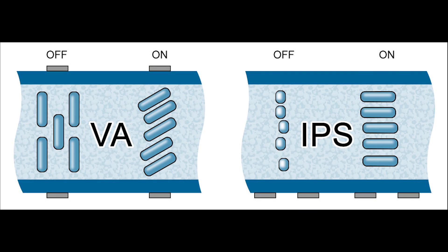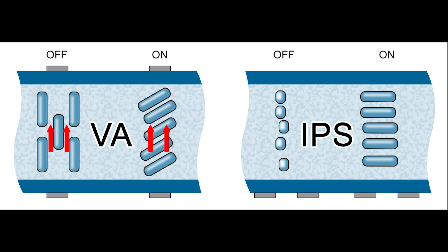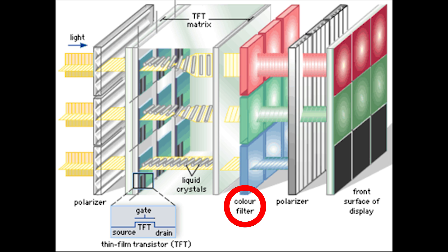By contrast, LCs in VA pixels rotate perpendicular to the glass substrate, hence the name. As a result, more or less light from the backlight underneath is allowed to pass through said pixel with varying degrees of applied voltage. Color filters alter backlight wavelengths for various RGB shades, and polarizers straighten out the rays.